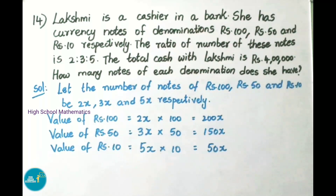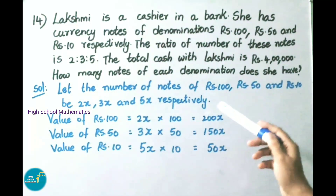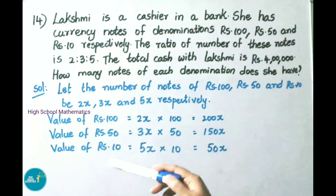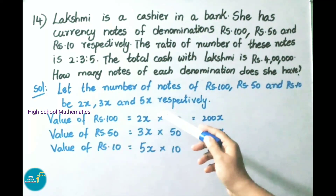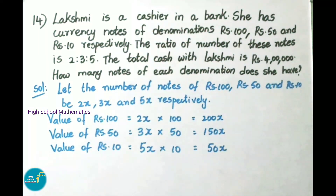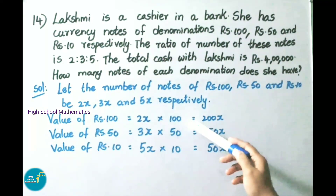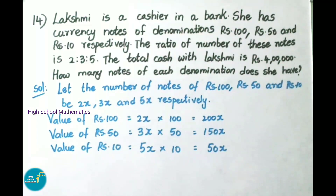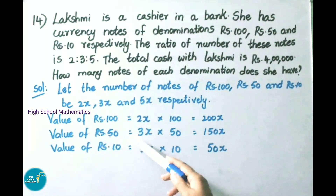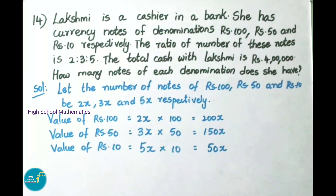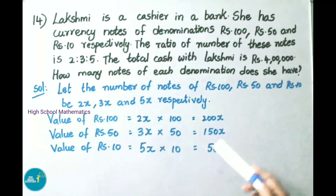Let us see the solution. Let the number of notes of 100 rupees, 50 rupees and 10 rupees be 2x, 3x and 5x respectively. Value of 100 rupee notes is 2x times 100, that is 200x. Value of 50 rupee notes is 3x times 50, that is 150x. Value of 10 rupee notes is 5x times 10, that is 50x.